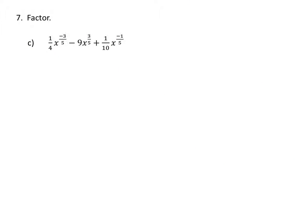To factor this expression, we need to find the lowest exponent. We've got negative 3 over 5, 3 over 5, and negative 1 over 5. The lowest exponent is negative 3 over 5. We want to include that lowest exponent in all terms that don't already have it, so let's focus on the second and third terms since the first term is already fine.